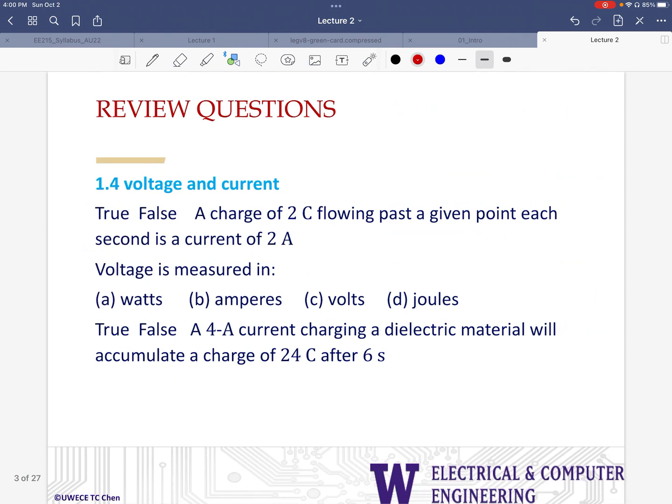Moving on, true or false: a charge of 2 coulombs flowing past a given point each second is a current of 2 amperes. So we need to look at how is current defined. Current is defined as a rate of change of charge, so I should equal...